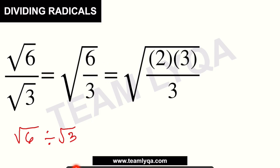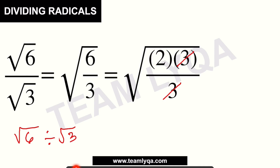Now that it's under one radical, it's easier to manipulate. If I factor 6, it becomes 2 times 3 over 3. Using cancellation — whatever is in the numerator that's also in the denominator can be cancelled — the 3 over 3 becomes 1. That leaves only 2 inside, giving us 2 over 1, which is 2. So the answer is the square root of 2.